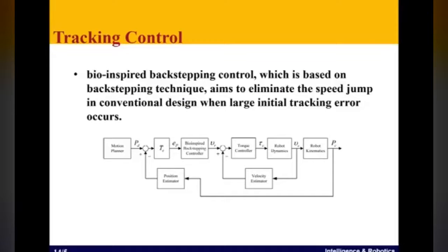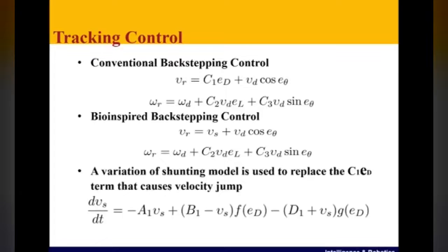To track a desired path by controlling the position, speed, or acceleration of the robot, the bio-inspired backstepping control, which is based on the backstepping technique, aims to eliminate the speed jump. A variation of the shunting model is used to replace the C1ED terms that cause velocity jump.